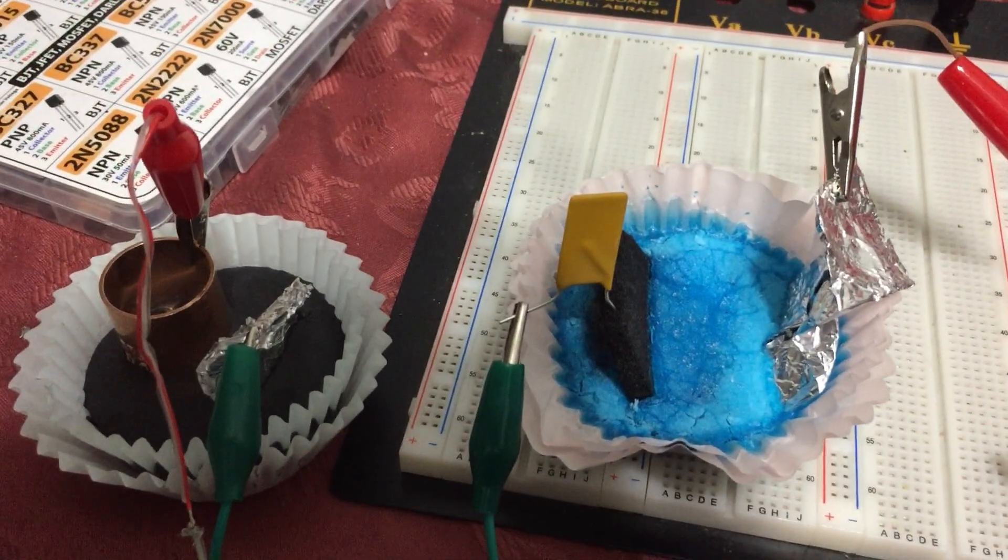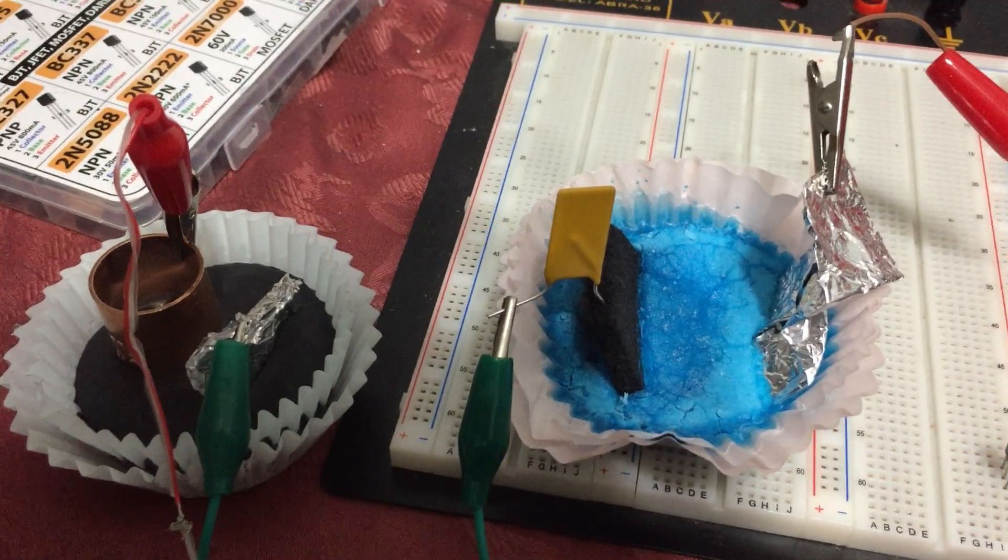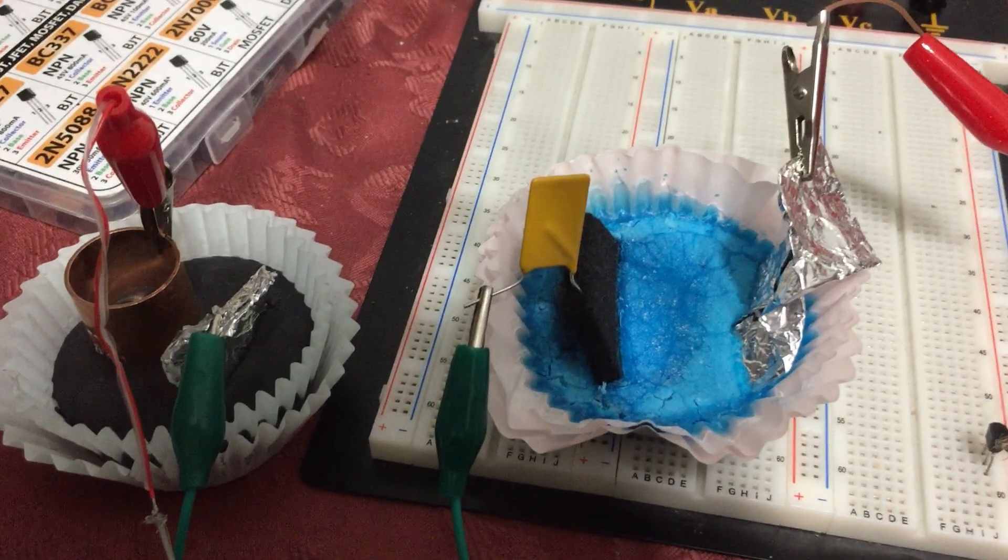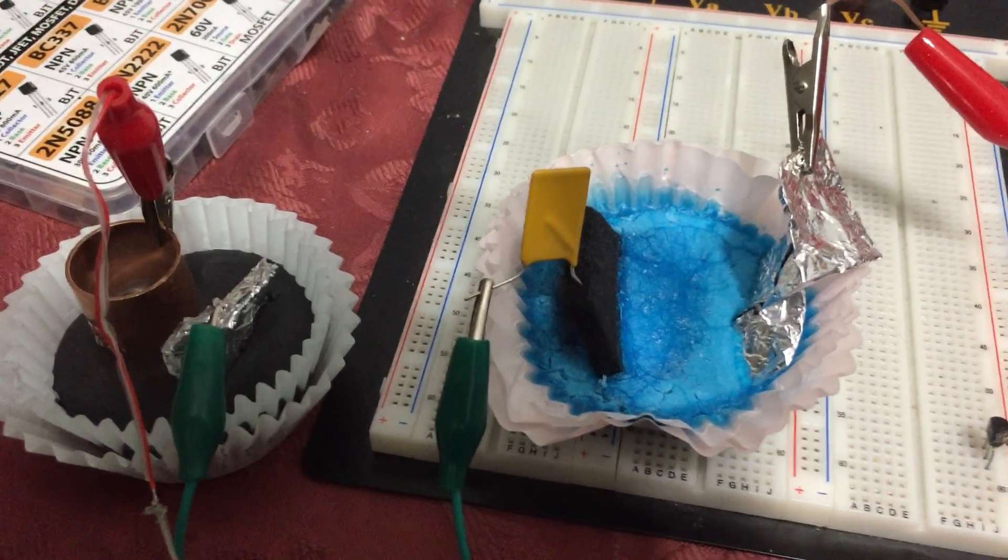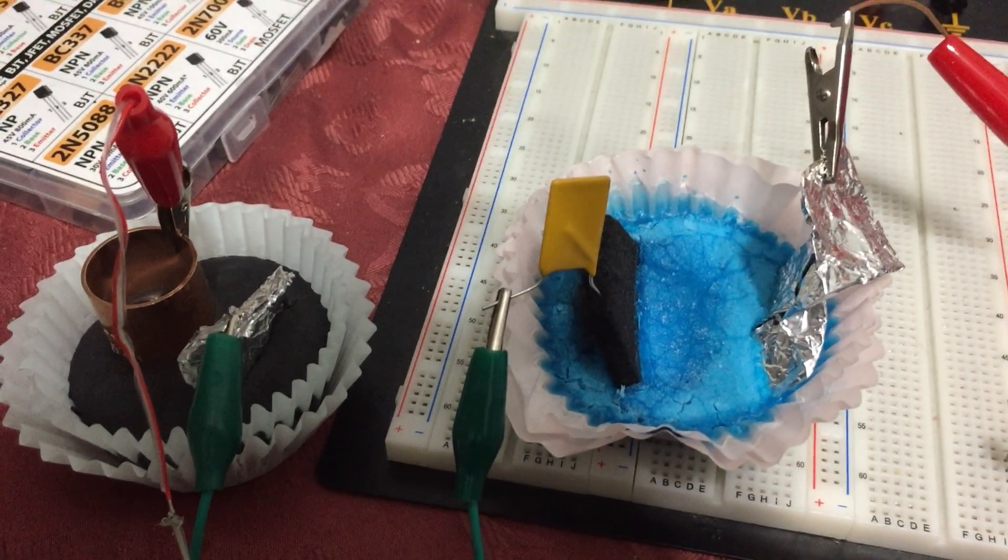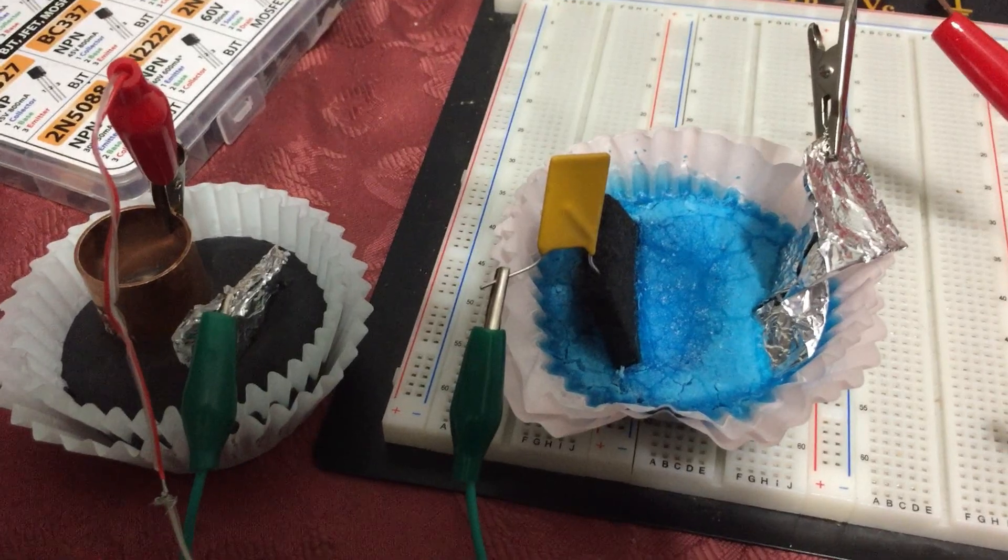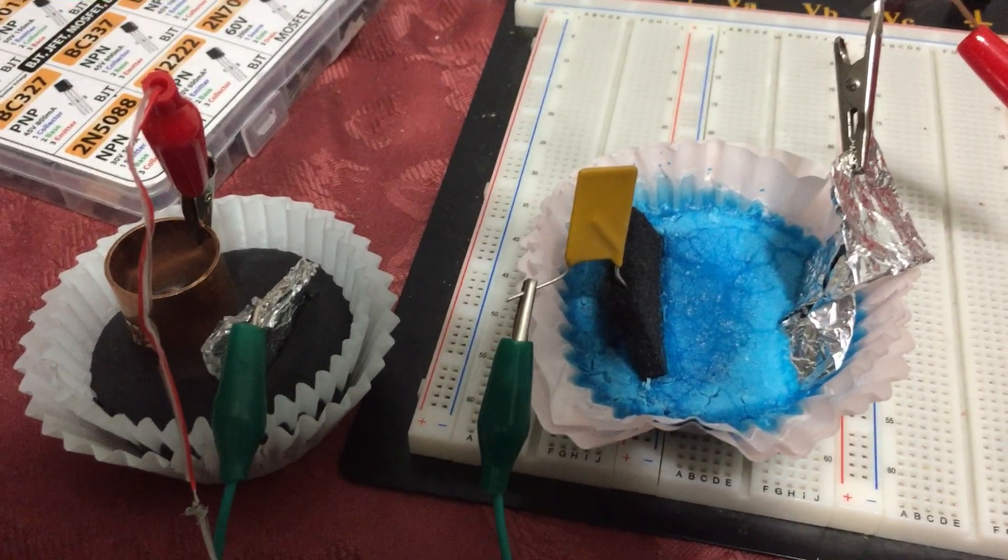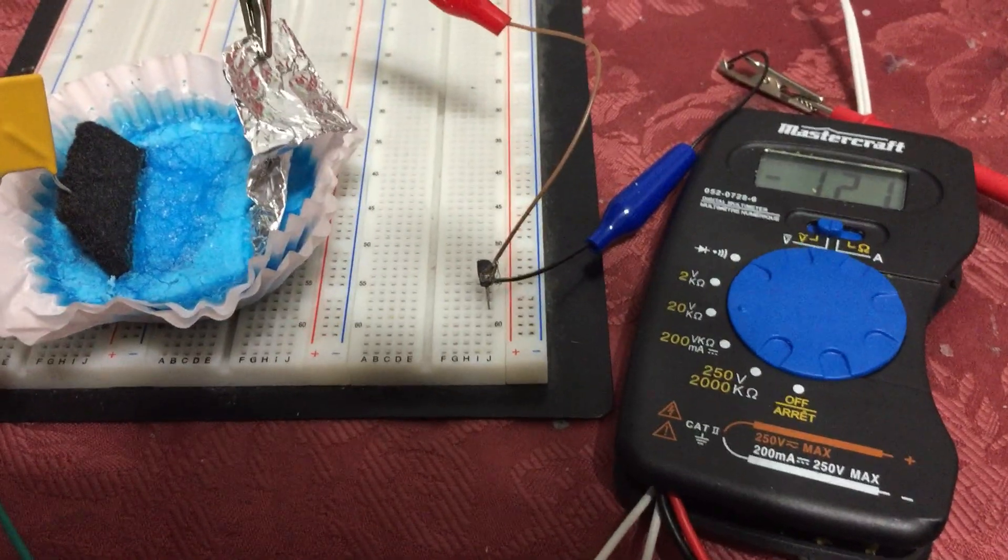But since I've noticed the AC fluctuations, I figured this would be a good way to block the DC out and take advantage of those fluctuations and see if we can get some voltage here.